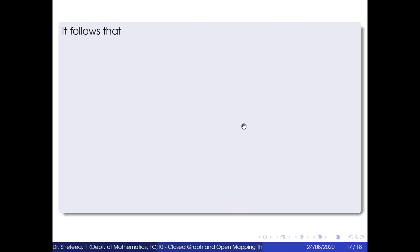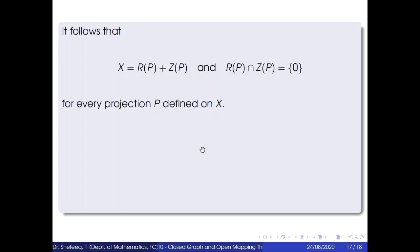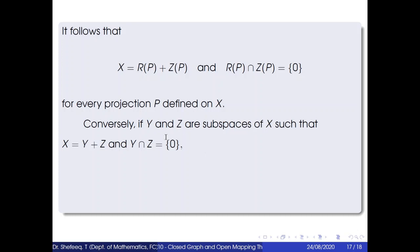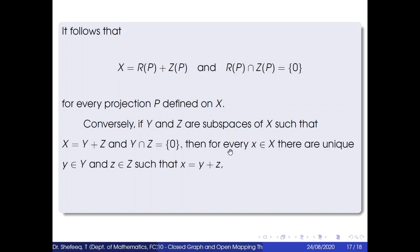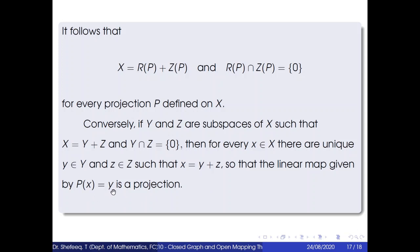It follows that X = R(p) ⊕ Z(p) and R(p) ∩ Z(p) = {0} for every projection p defined on X. Conversely, if Y and Z are subspaces of X such that X = Y + Z and Y ∩ Z = {0}, then for every x in X there are unique y in Y and z in Z such that x = y + z. The linear map defined by p(x) = y is a projection, called the projection onto Y along Z.